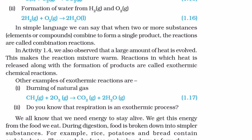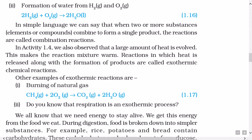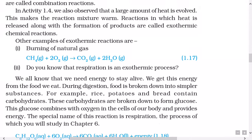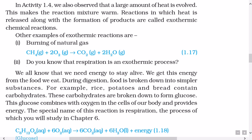In Activity 1.4, we also observed that a large amount of heat is evolved, which makes the reaction mixture warm. Reactions in which heat is released along with the formation of products are called exothermic chemical reactions. Other examples of exothermic reactions: Number 1 — Burning of natural gas: CH4 (gaseous) plus 2O2 (gaseous) gives rise to CO2 (gaseous) plus 2H2O (gaseous).